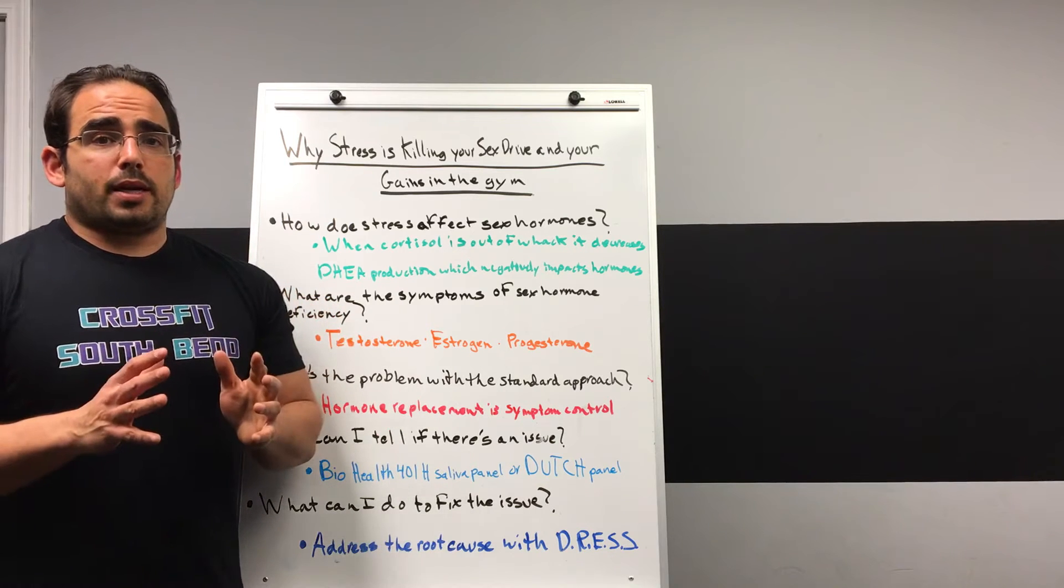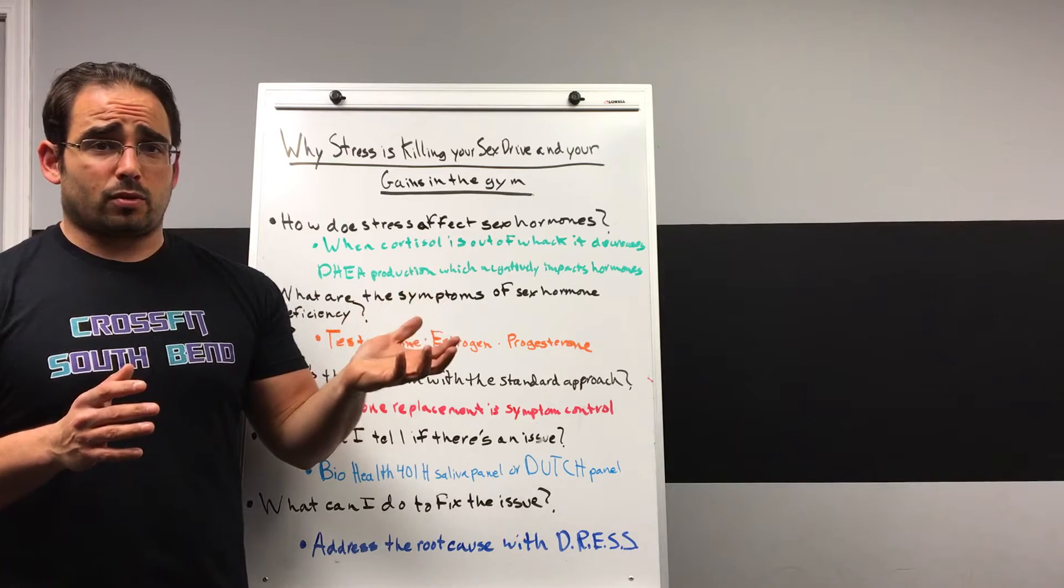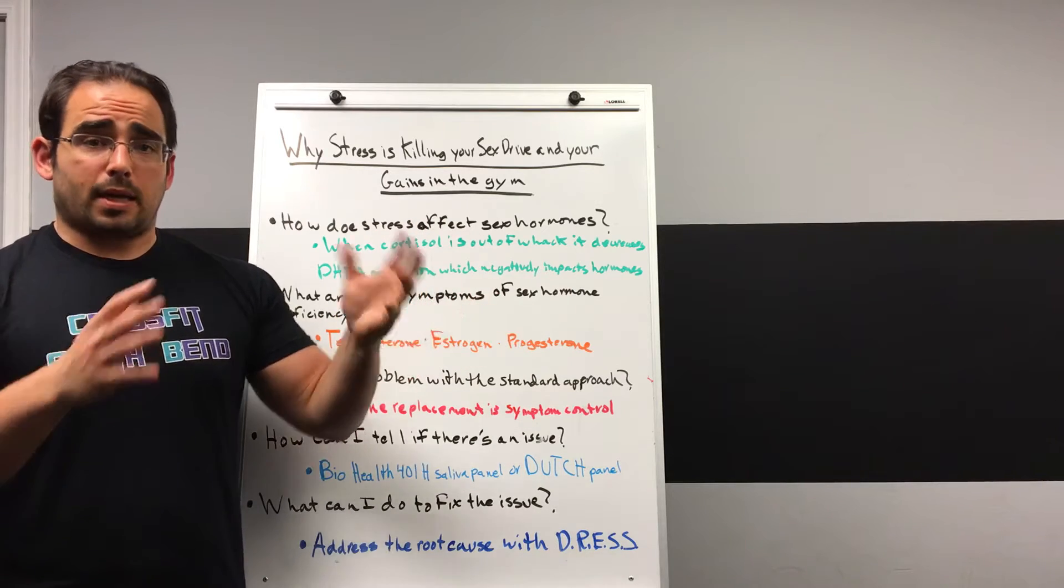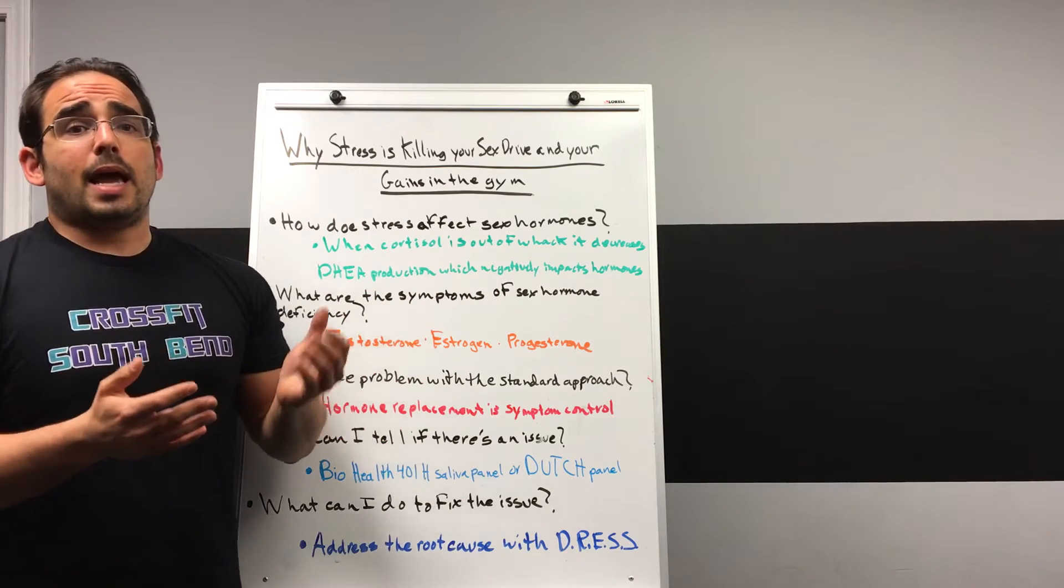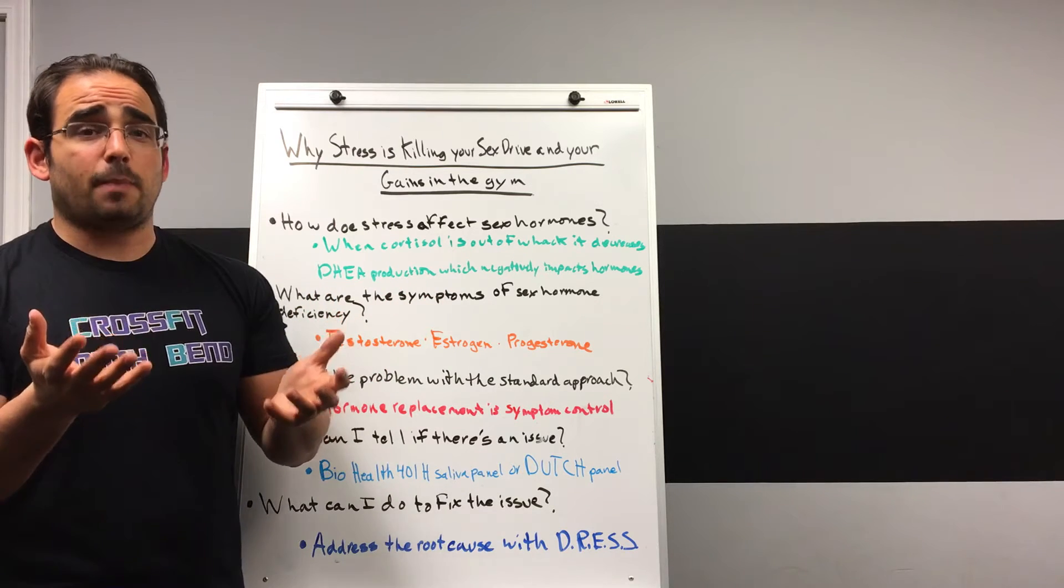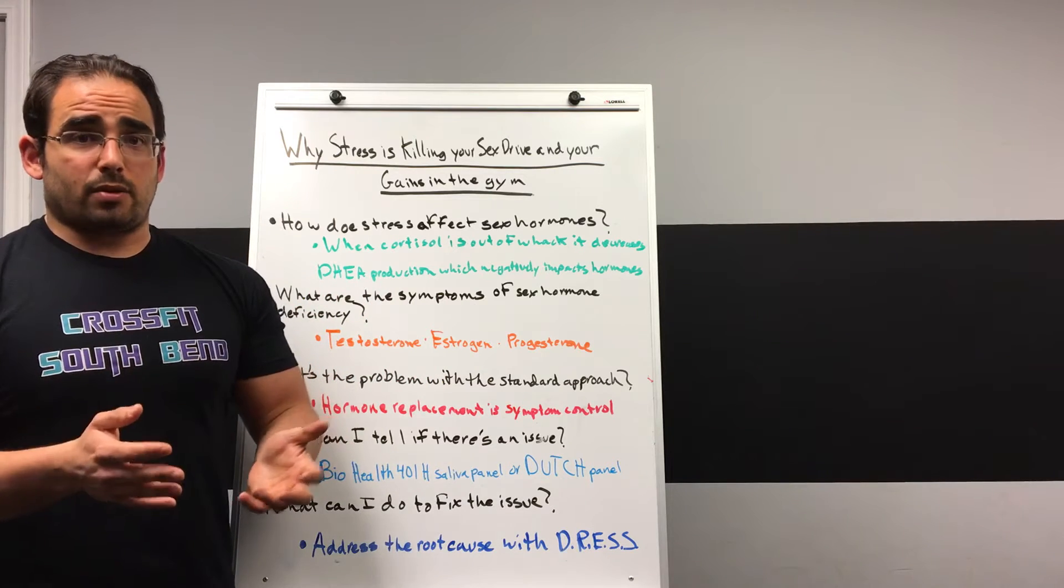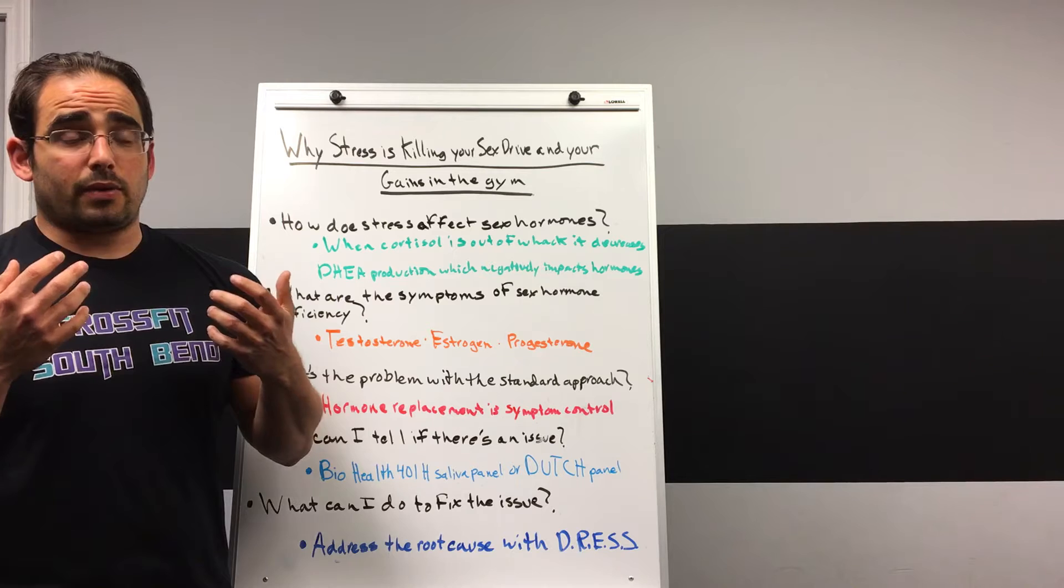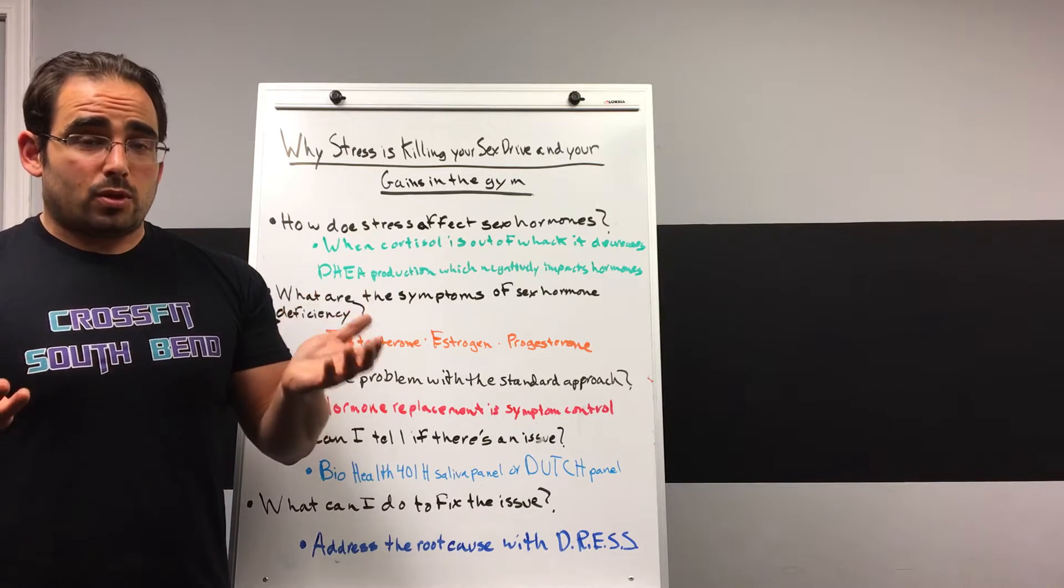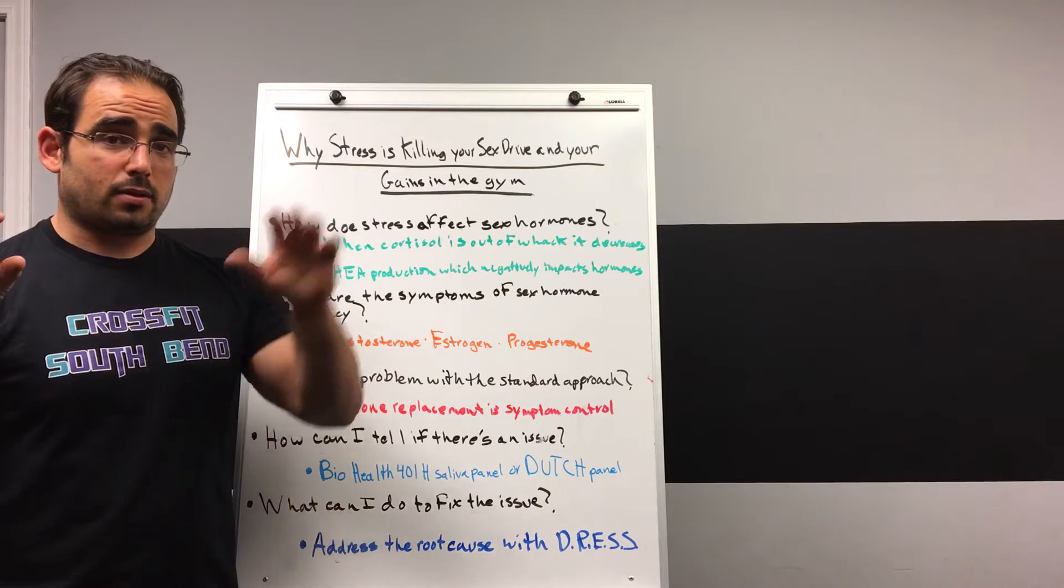Let's first understand the relationship between something called cortisol, which is your master stress hormone and it's also your master catabolic hormone, meaning that it breaks down body tissues, and DHEA, which is your master anabolic hormone. It's the hormone that helps build body tissues up, and DHEA is also the mother of testosterone and the different types of estrogen. When your body is chronically under stress, it will use the substance that makes both DHEA and cortisol. DHEA is over here, cortisol is over here.